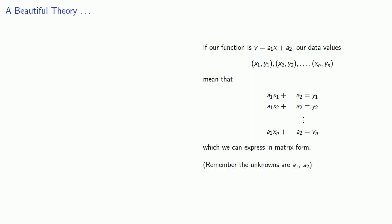Now here, remember the unknowns are the a1s and the a2s. And so in matrix form, we want to find a1, a2, where Ax equals b, where A is our coefficient matrix, x is our column of variables, and b is our column of constants.